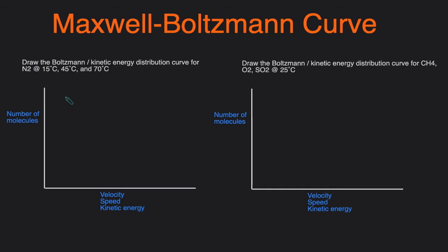Maxwell-Boltzmann distribution curves are also called kinetic energy distribution curves. These curves show how the kinetic energy or molecular speed is distributed for a particular compound, and can be broken into two broad categories: that involving a change in temperature, and that involving a change in the identity of the substance. So let's jump into some examples.